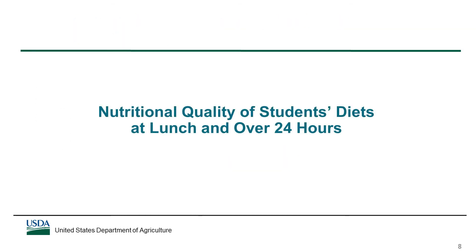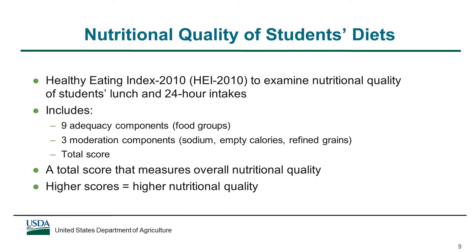Next, we'll look at the nutritional quality of students' diets both at lunch and over 24 hours. We use the 2010 version of the Healthy Eating Index, or the HEI 2010, to examine the nutritional quality of students' diets. The HEI 2010 assigns scores to students' diets based on consistency with recommendations of the Dietary Guidelines for Americans. This includes scores for nine adequacy components, which include food groups such as fruits, vegetables, dairy, and whole grains; three moderation components, which focus on sodium, empty calories, and refined grains — dietary components that most people need to decrease; and a total score that provides a measure of overall nutritional quality. Scores are expressed as a percentage of a maximum possible score, and scores closer to 100% indicate intakes of higher nutritional quality.